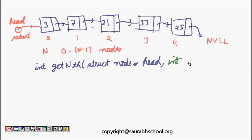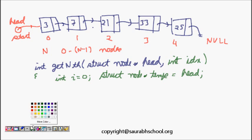What will I do now? I will define int i equals 0, and then struct node star temp. This temp is necessary for traversing. Temp is equal to head. So this is done.